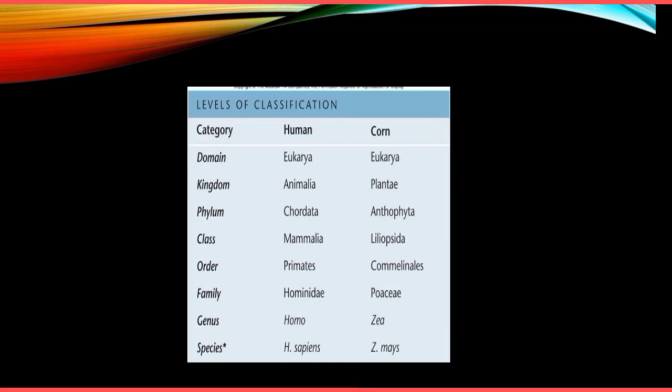There are different levels for classifying organisms. For example, comparing a human and corn — notice the categories. The categories are ranked from largest to smallest. At the top are the broadest categories with the most organisms but the most differences among them. As you go down, the groups become smaller but the organisms share more similarities.